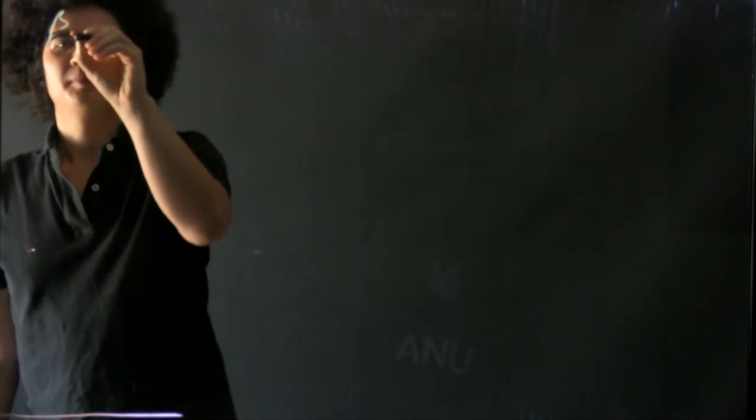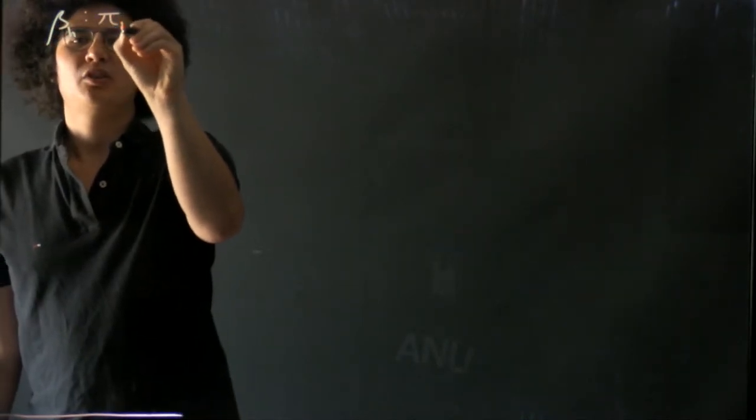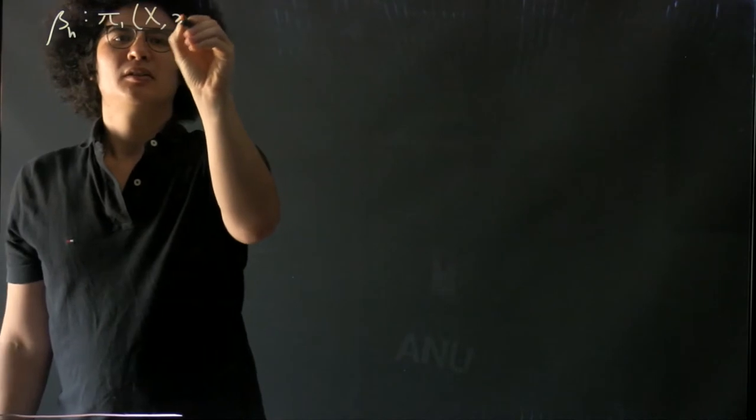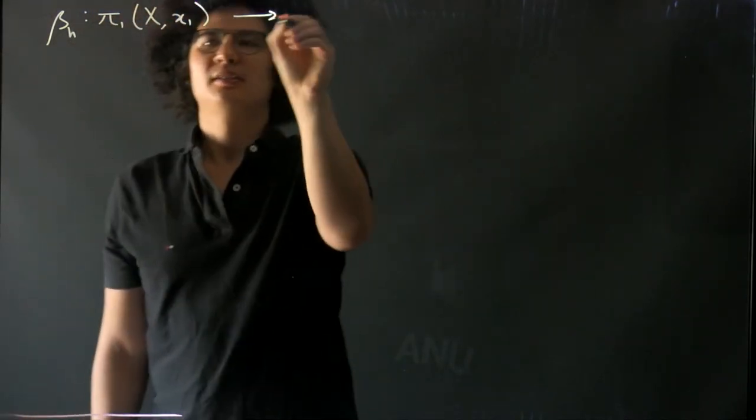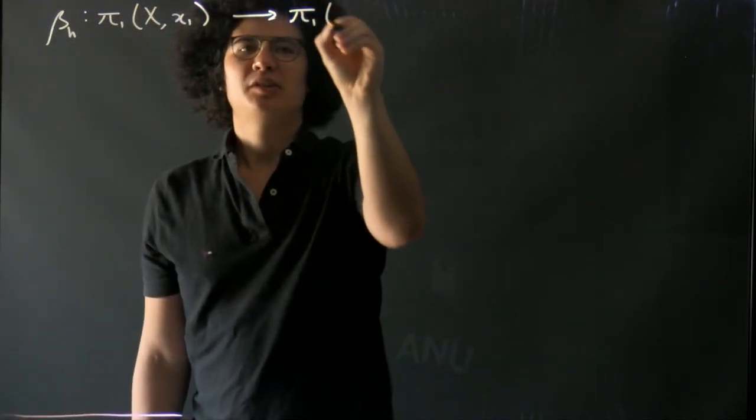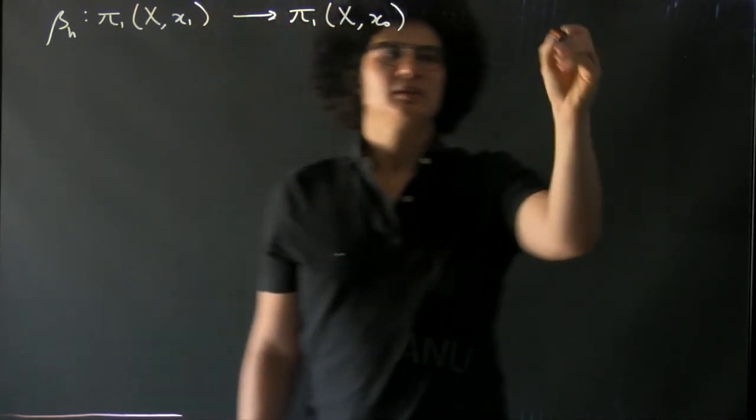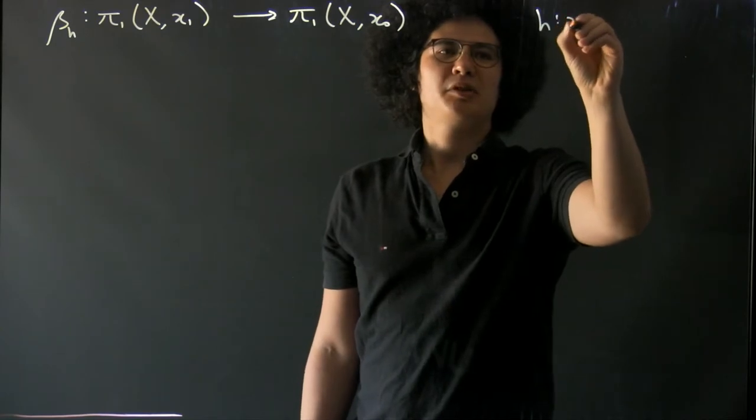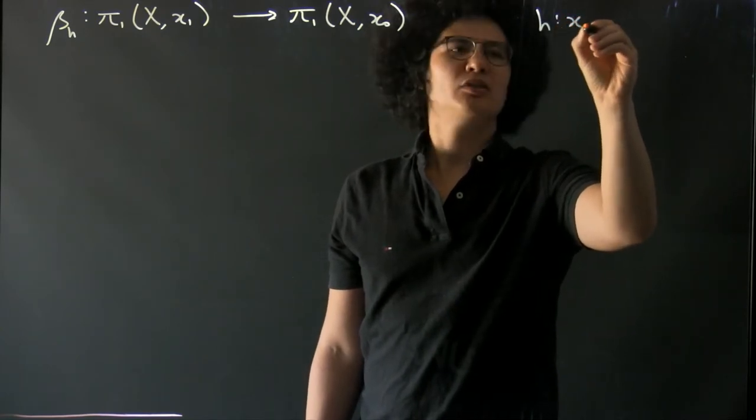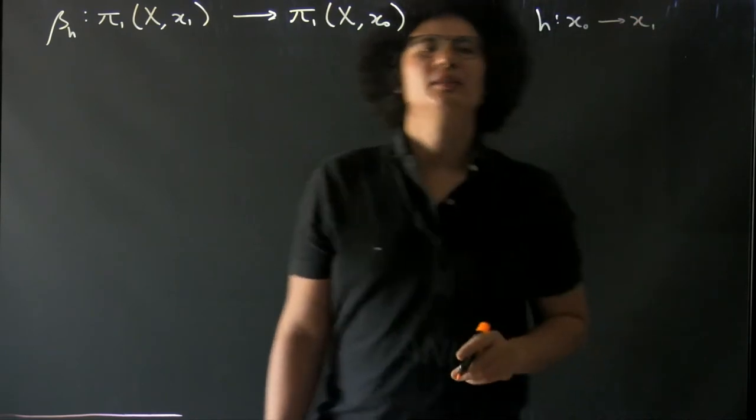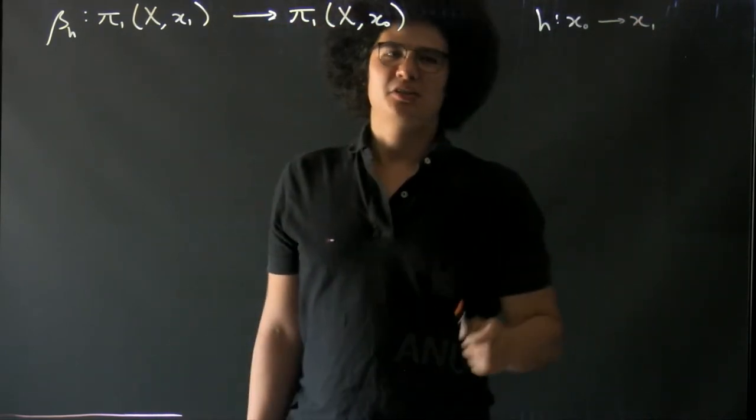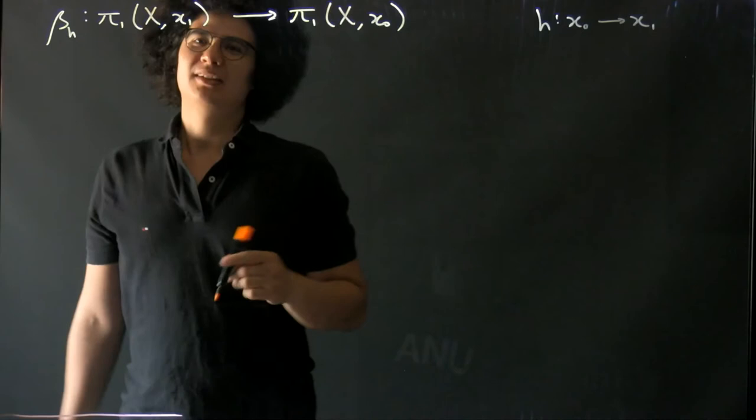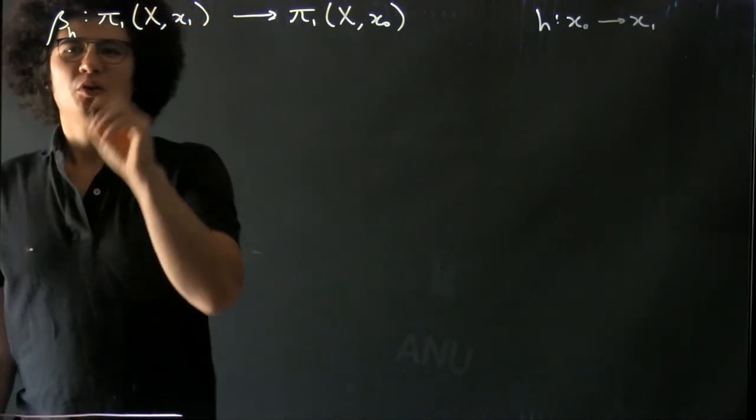It's now quite straightforward to see that this change of base point homomorphism, which we had going from the fundamental group at x₁ to the fundamental group at x₀, where h was a path from x₀ to x₁—so this is a bit of abusive notation—has inverse...